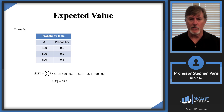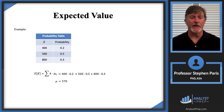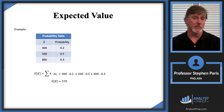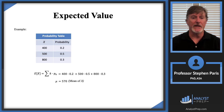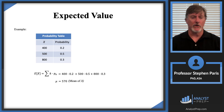So that's the expected value. The expected value is also referred to as the mean, and when we think of it as the mean, we write mu. So mu equals 570 — that's the mean of the random variable X.